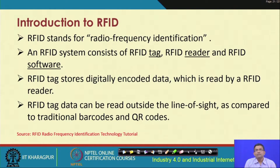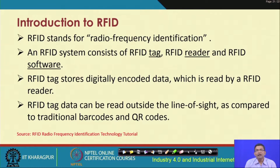RFID has three components: the RFID tag itself, which is attached to different items like clothes and utensils; the RFID reader, which reads from the tag; and the RFID software, which powers the entire operation. RFID tags store digitally encoded data which is read by an RFID reader, and RFID tag data can be read outside the line of sight, unlike traditional barcodes or QR codes.